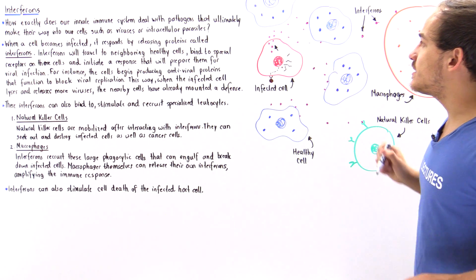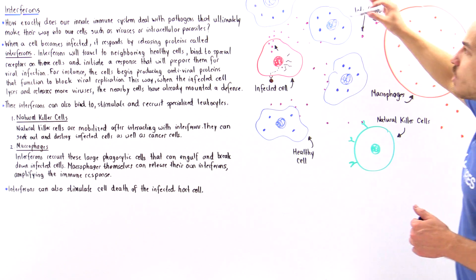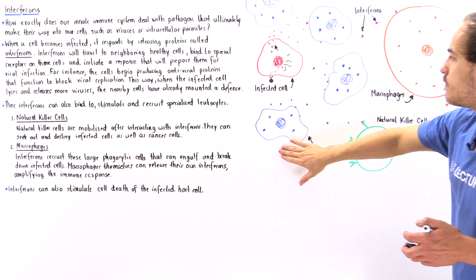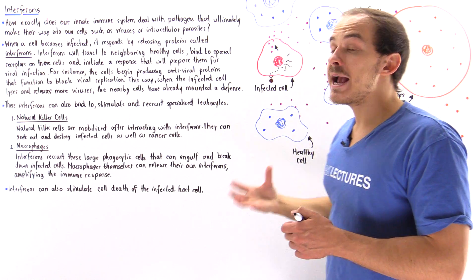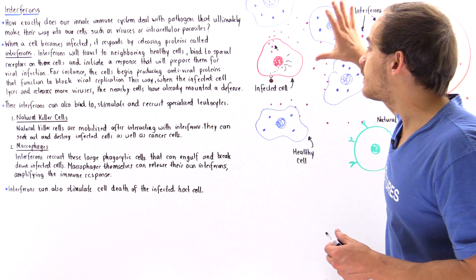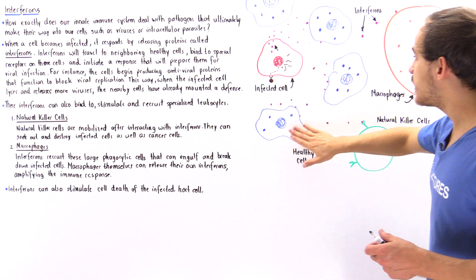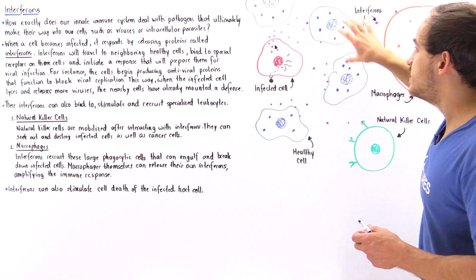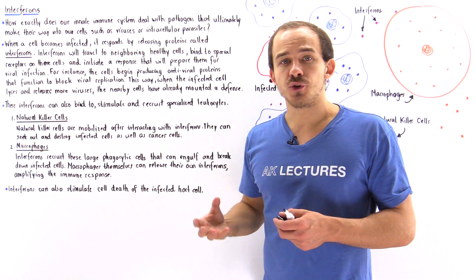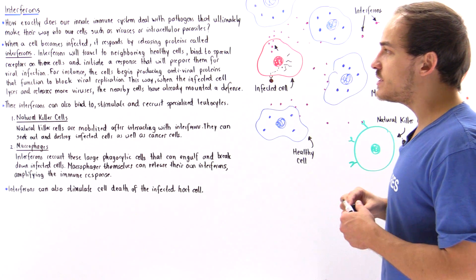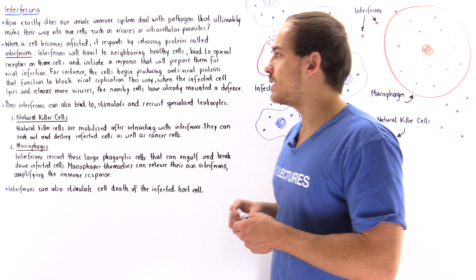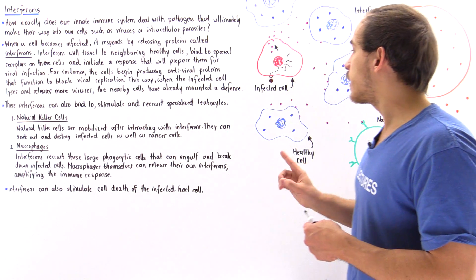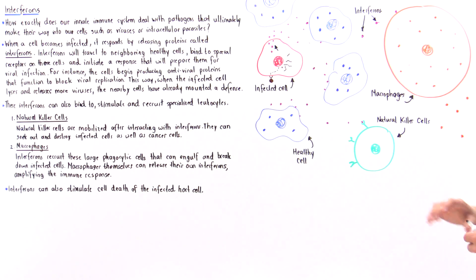So what these interferons do is they ultimately bind onto the membrane of these healthy blue cells and they prepare those cells for that viral infection. For example, they ensure that these blue cells, healthy cells, begin to produce special types of proteins that essentially are anti-viral proteins.